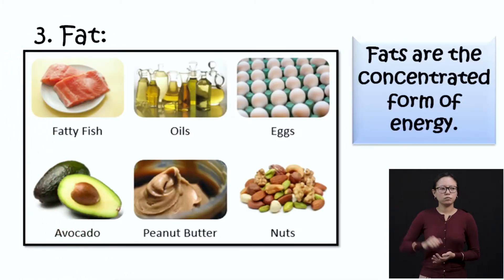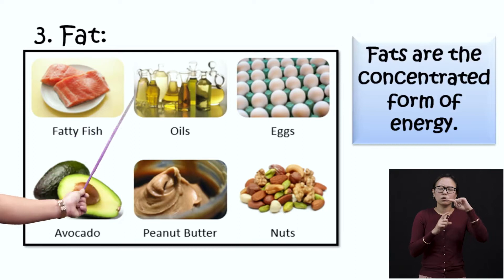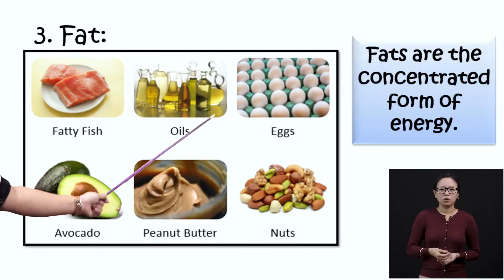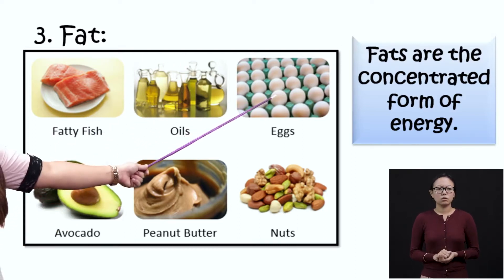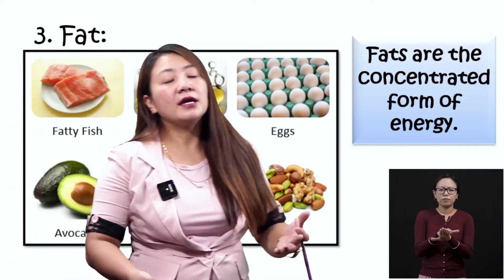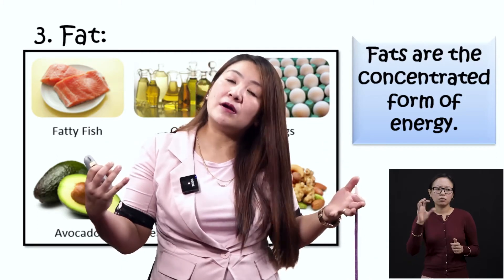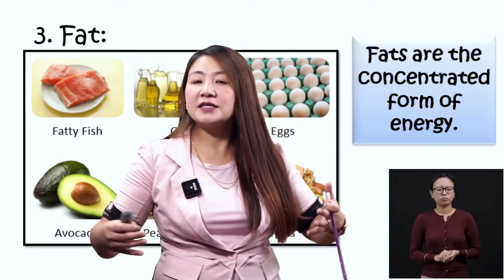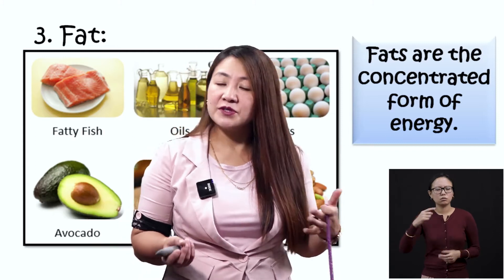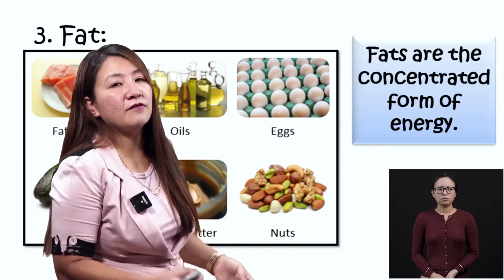Then we have fats. They are the concentrated form of energy, or they are the stored food. Fats are the stored food — you'll find them in various types of oils, fatty fish, eggs, nuts, butter, and even in the fruit avocado. We eat these and they are stored in our body. Whenever we are hungry, temporarily, they provide energy.